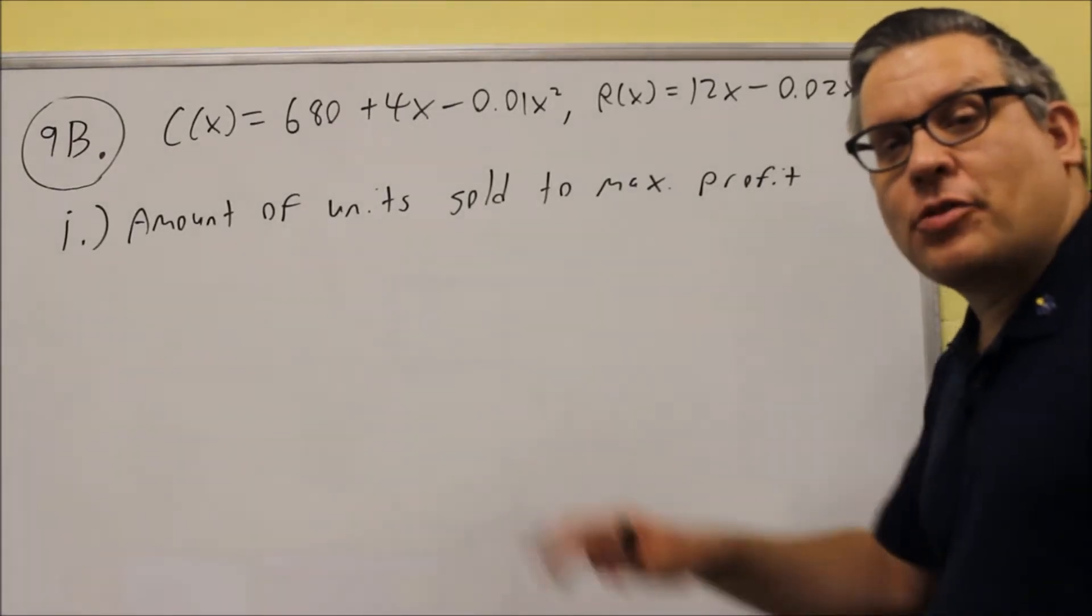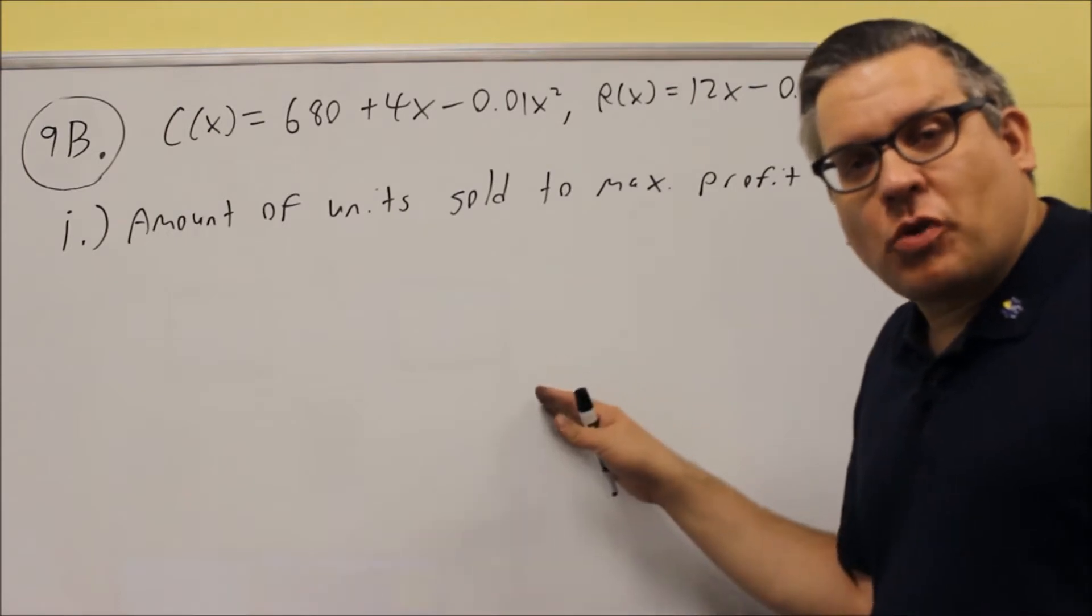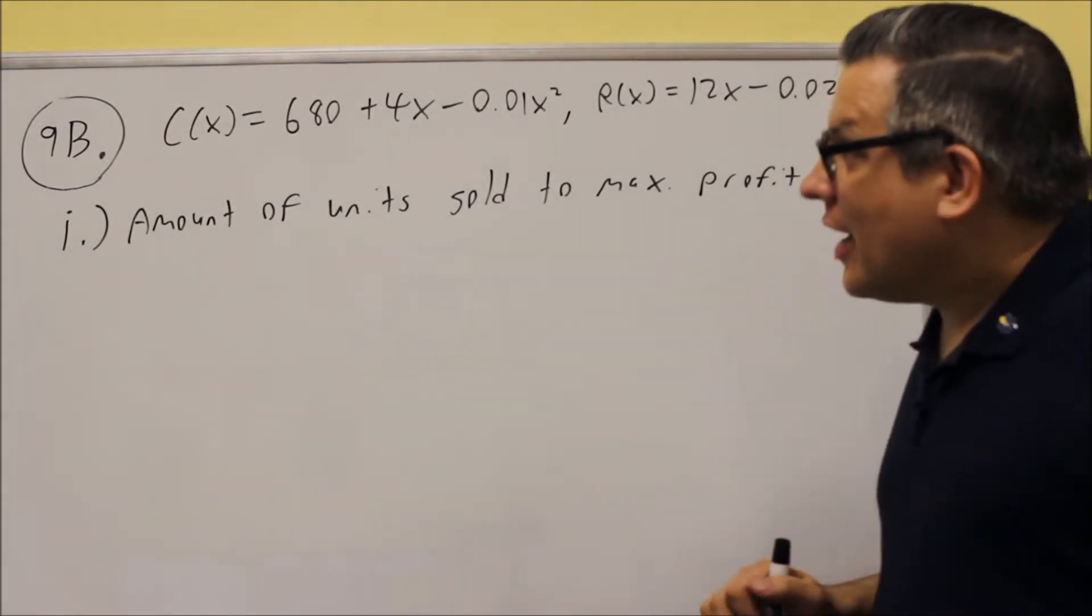For 9A, you had that fencing problem and you had to set up the equation. You have to do so on this one as well, although this one's not as bad as 9A was.